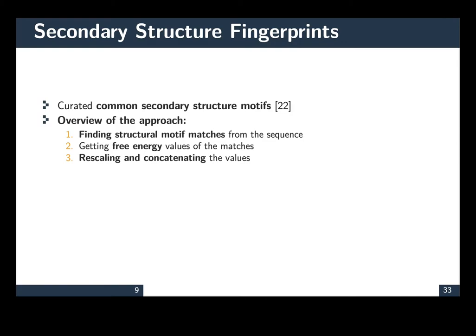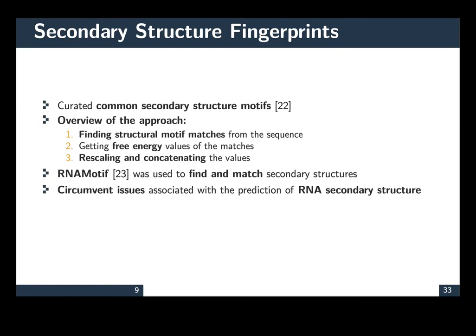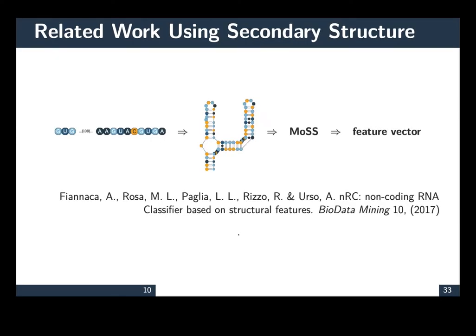This information is rescaled, and that produces the feature vector. The tool that was used for finding the matches is RNA motif. And this approach is meant to circumvent some of the current limitation associated with the prediction of RNA secondary structure information.